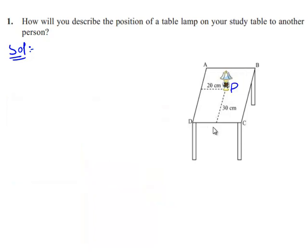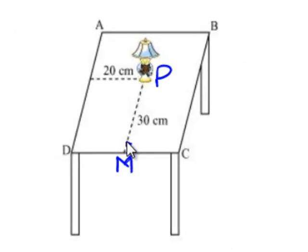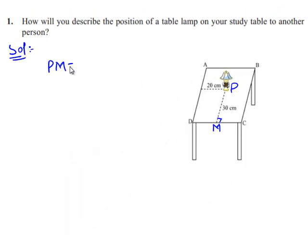Now draw a perpendicular PM from the point P to the bottom edge CD of the table ABCD. So here PM equals 30 cm.